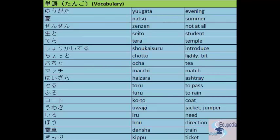We will start with vocabulary. The first word is 'yugata' — evening. 'Natsu' — summer. 'Zenzen' — not at all. 'Seito' — student. 'Tera' — temple. 'Shokai suru' — to introduce. 'Shokai' is a noun which means introduction; when you add 'suru' to a noun it becomes a verb, so 'shokai suru' means to introduce.